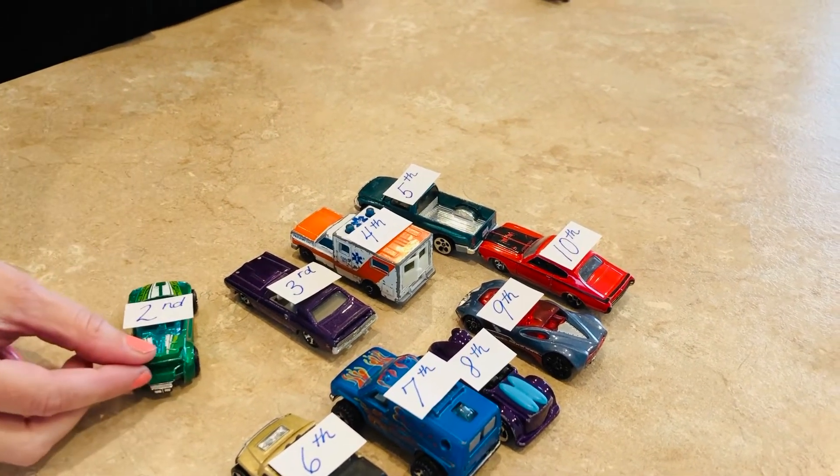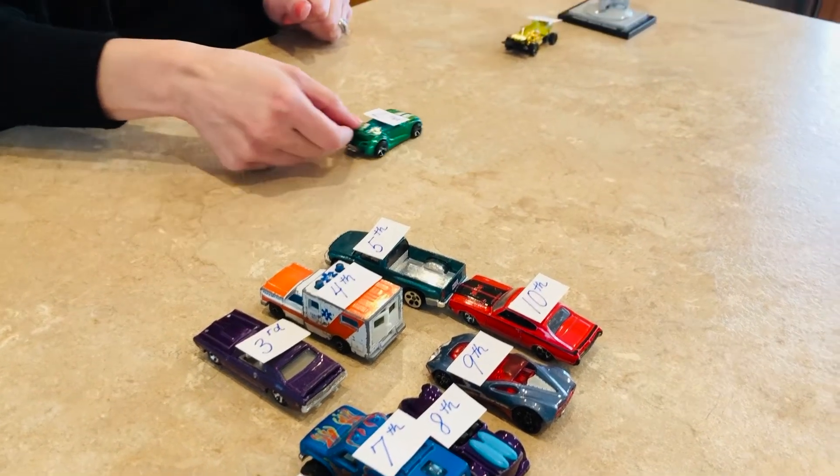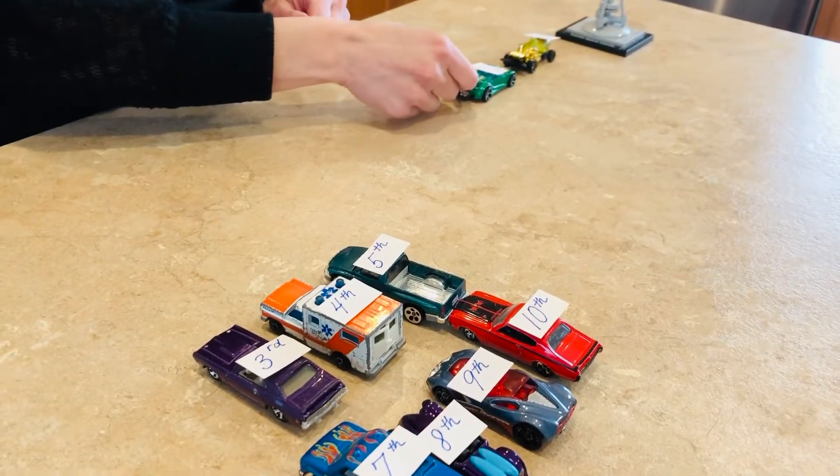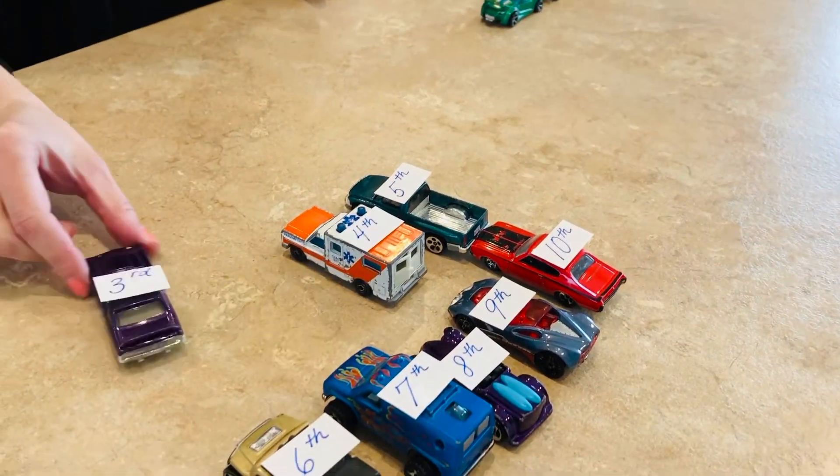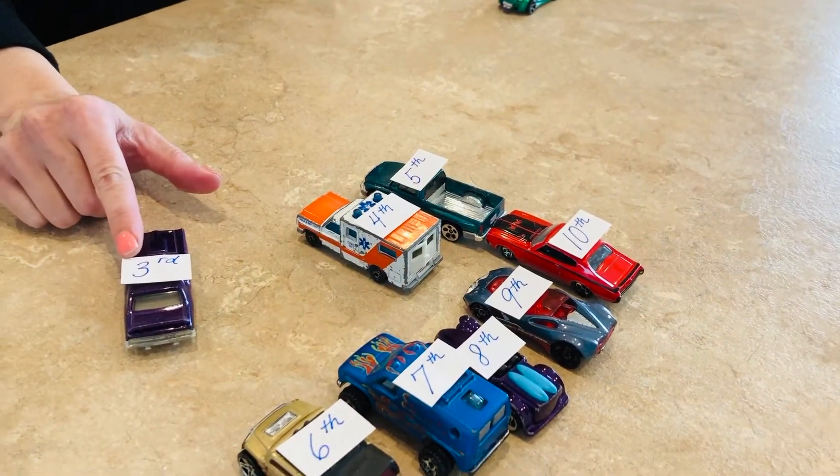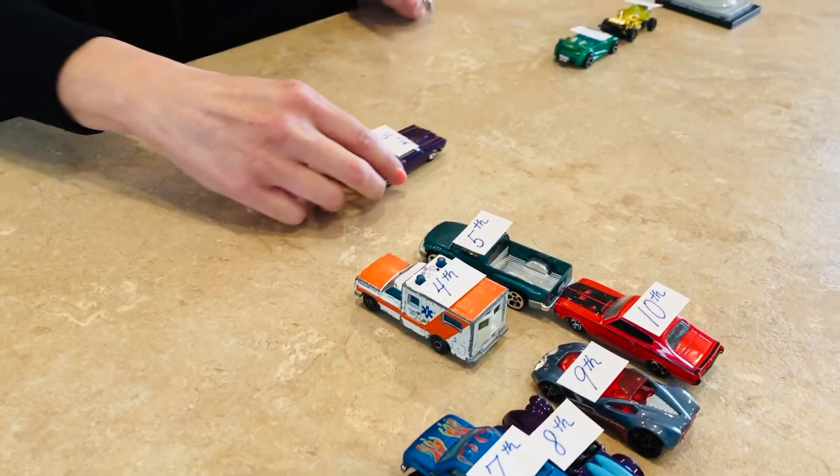Second has a two. Second. Say that with me. The green car is second, and he's going into the city as well. Lining up. After second comes third. Third. Three means third. The purple car is going in third.